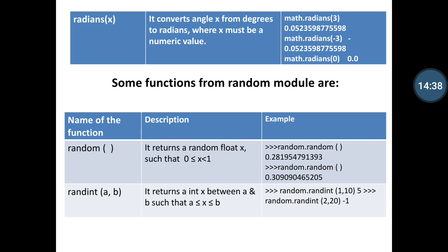Some functions from random modules are also described here in our slide. A table is described about random module. First of all we discuss random function. It returns the random float x such that x greater than or equal to 0 or x less than 1. Then we put at the script: random.random(), then bracket. Then it shows an output when you execute the code.